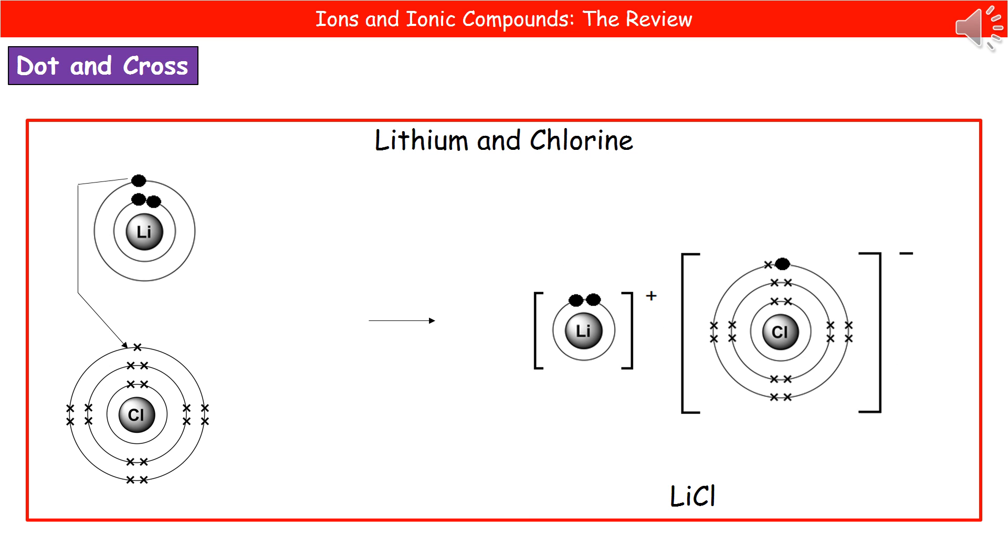So when we've got a positive ion and a negative ion, then when those are reacting together, they form what's called an ionic bond. Now, you could be asked to draw a dot and cross diagram to show ionic bonding of two chemicals. So in this case, I've given you the example of lithium and chlorine. So on the left hand side there, we can see the actual atoms of lithium with its three electrons and chlorine with its 17.